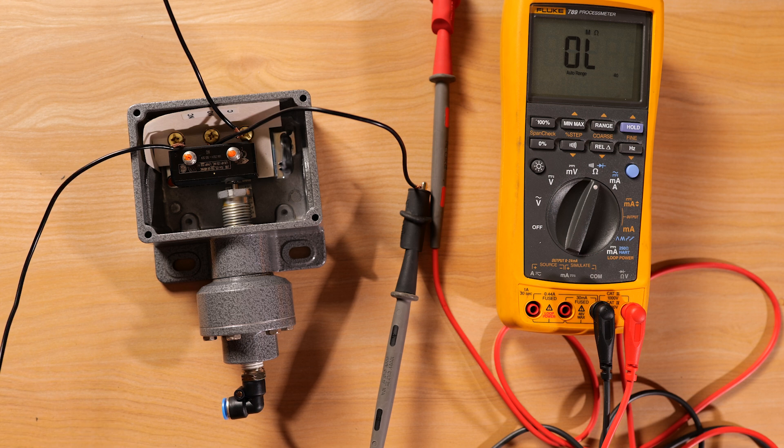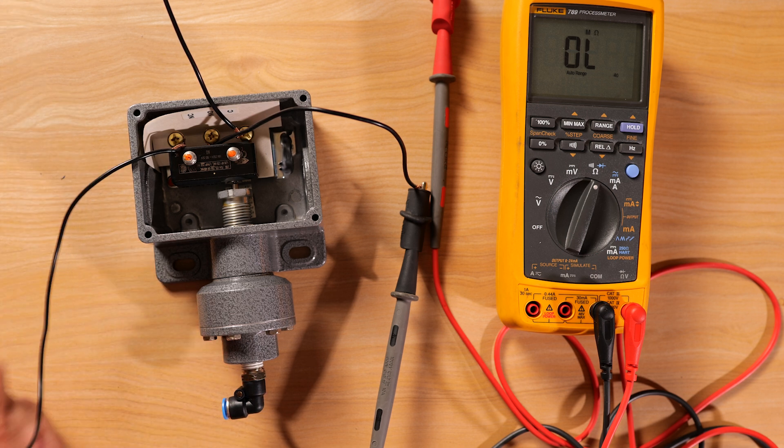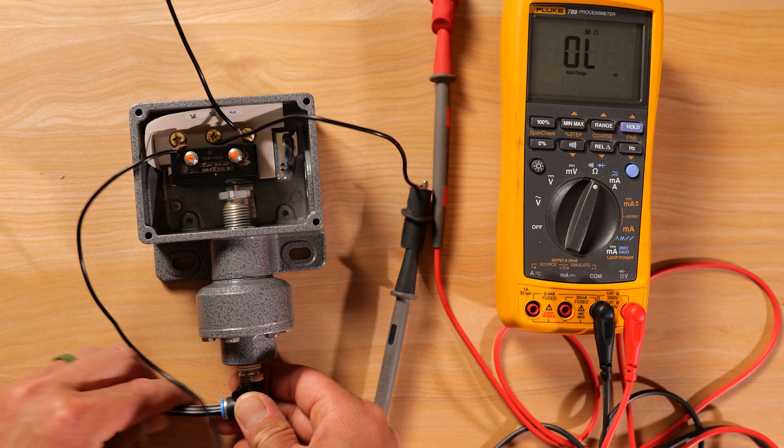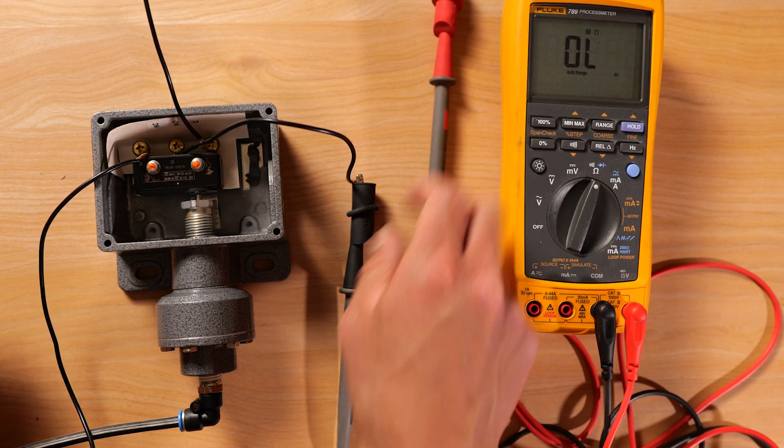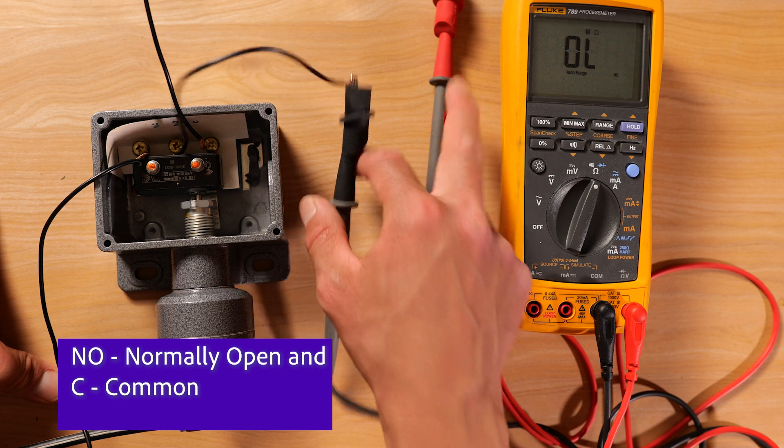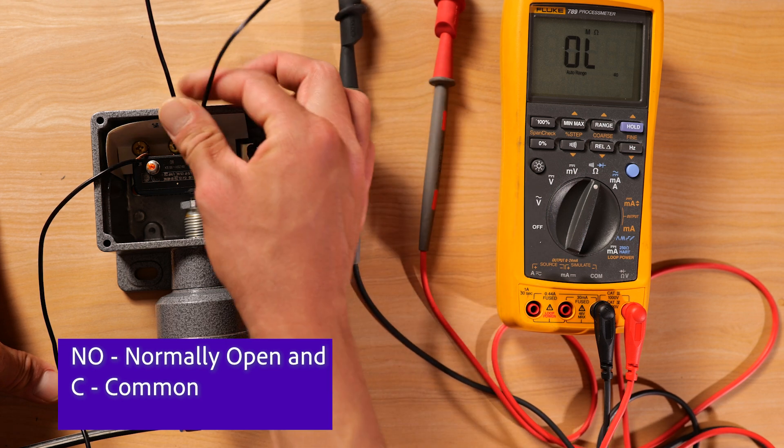Now we're going to apply pressure on this mechanical pressure switch. Here we just got a simple pump that we're going to apply pressure. And I have the meter set up for normally open and closed right now. So NO and C.